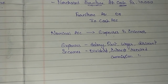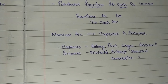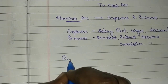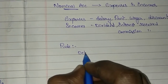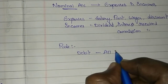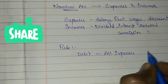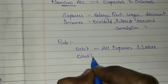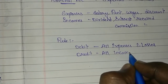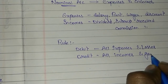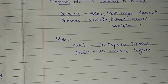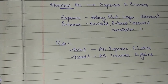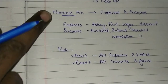The rule for nominal accounts is: debit all expenses and losses. Whatever expenses or losses the company is facing, those should be debited. In the credit column, you should show all incomes and gains. So expenses and losses go in the debit column, and incomes and gains go in the credit column.